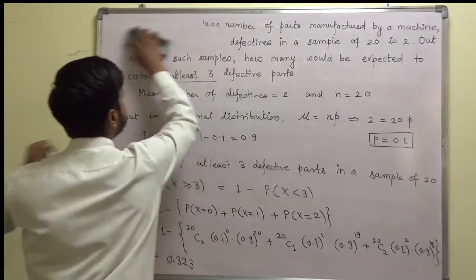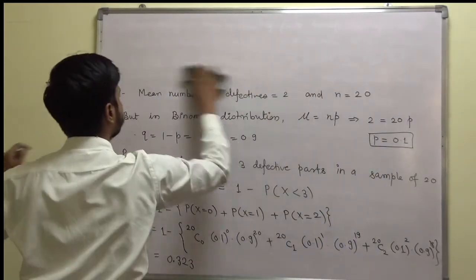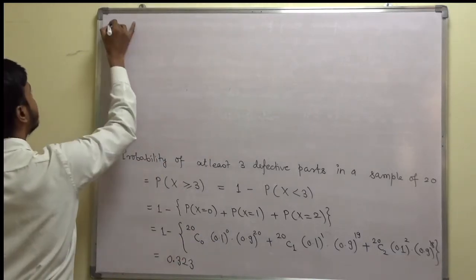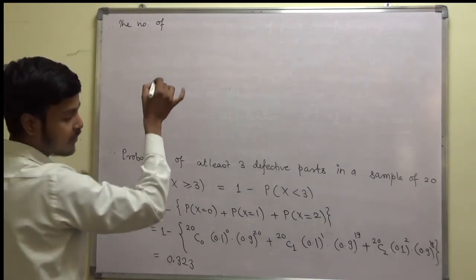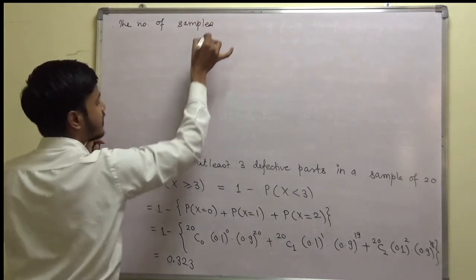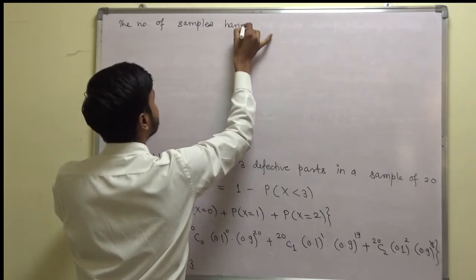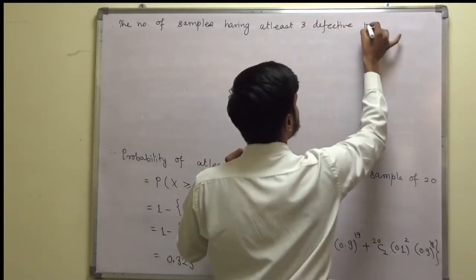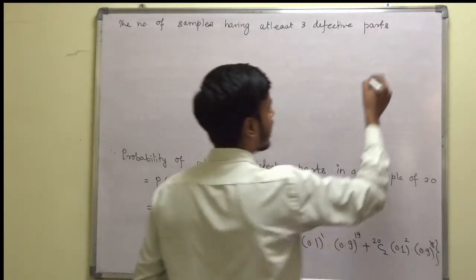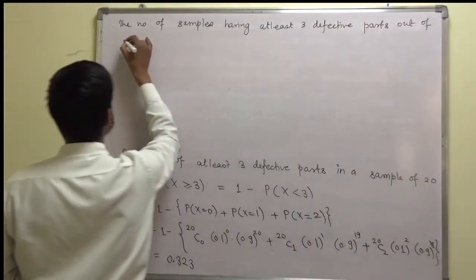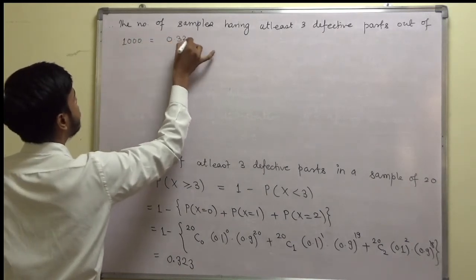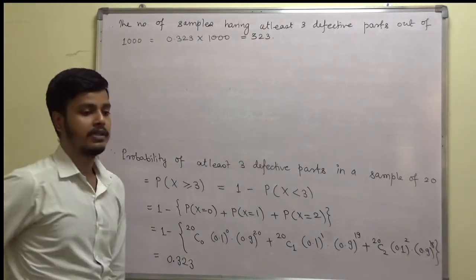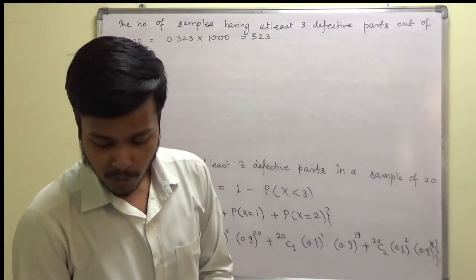Therefore, the number of samples having at least 3 defective parts out of 1000 is equal to 0.323 into 1000, which comes out to be 323. So this completes the problem. Let us take one small problem on the basis of this only.